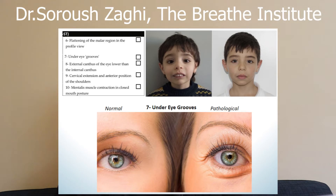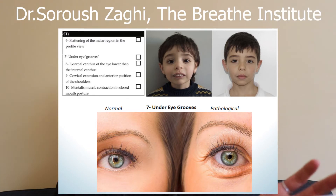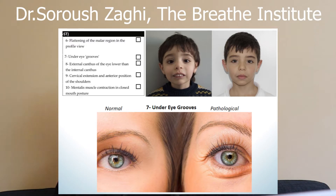The next thing to look out for is under-eye grooves — a little bit of bagginess under the eyes. An important note: you might not be able to pick out any one of these signs and definitively claim someone has craniofacial abnormalities. You need to look at things comprehensively and consider all these factors together.